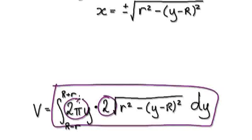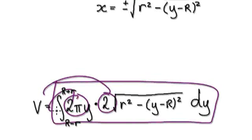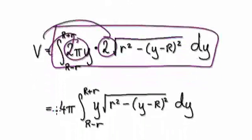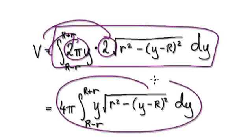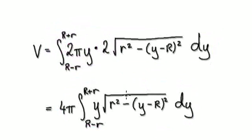So this is a constant, this is a constant — we can factor it out, and it would then give us this. So now it's just a matter of evaluating this integral.